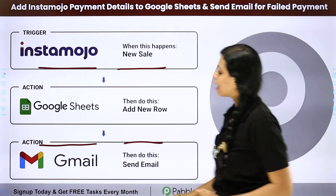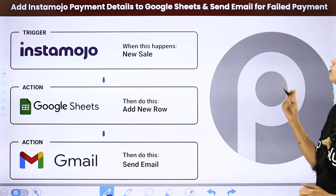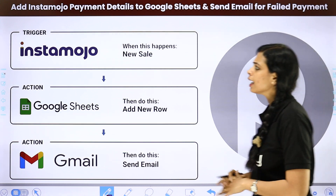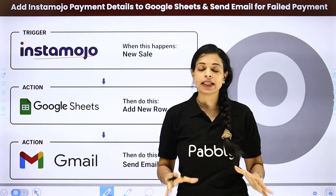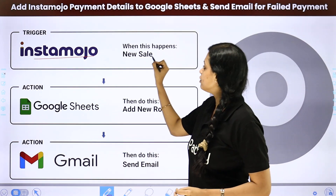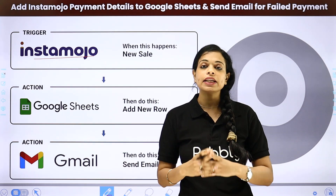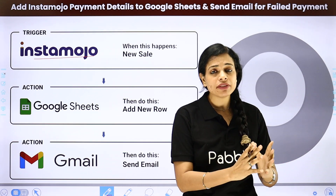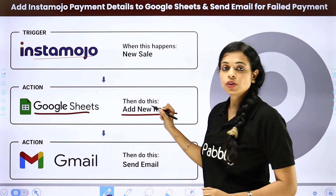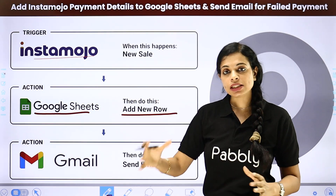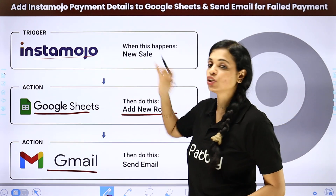The next example is how to add Insta Mojo payment details to Google Sheets and send an email for failed payments. We've taken the example of Insta Mojo as a payment gateway. Whether it is a failed payment, a new sale, or a created invoice, the moment the action happens it is automatically added as an entry in your Google Sheet, and then you can also send a mail to the person informing them about the action taken.